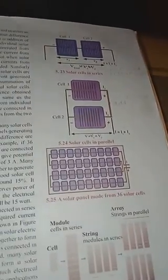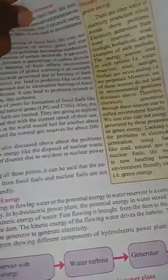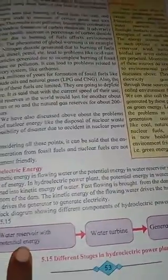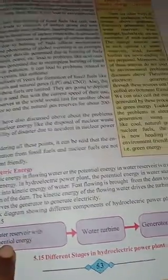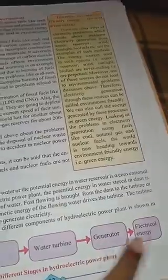In figure 5.15 they have shown how it works. Water reservoir's potential energy, water turbine, generator, then electric energy. This is how it runs.